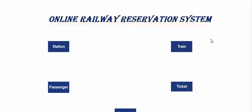Hi everyone, welcome to Code With You sub channel. In this tutorial we will talk about the ER diagram — entity relationship diagram — for an online railway reservation system. The scenario is: first the passenger comes and checks, then finds a train, books a ticket, and pays the money to the system.